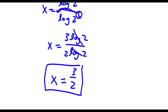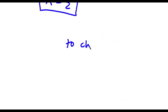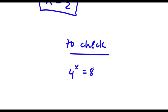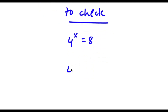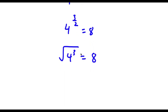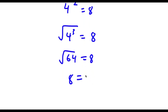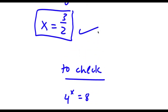So those are two methods of solving this problem. To verify: substituting x equals 3 over 2 into 4 to the power of x, I get 4 to the power of 3 over 2, which equals the square root of 4 to the power of 3. Since 4 cubed equals 64, I have the square root of 64 equals 8, which gives 8 equals 8. The solution is confirmed.